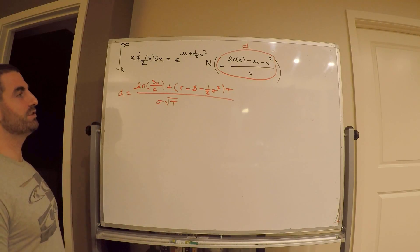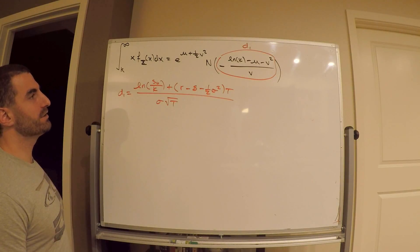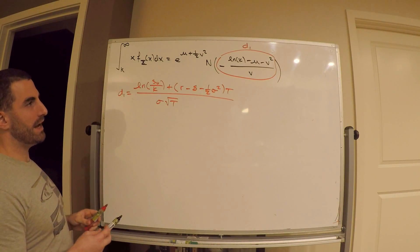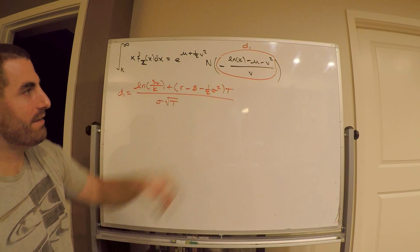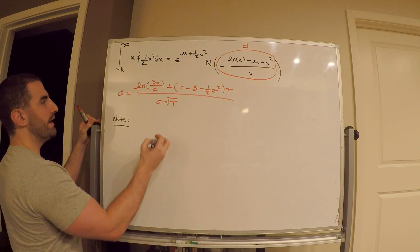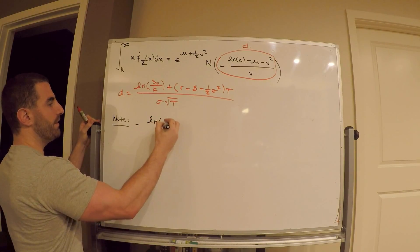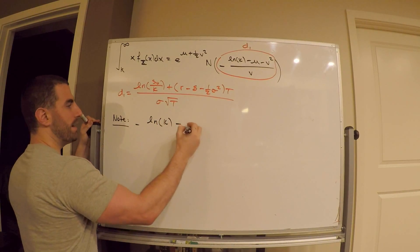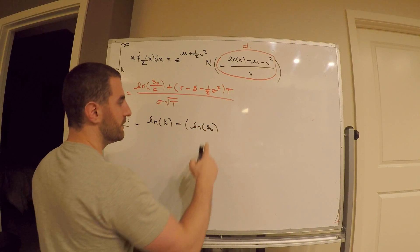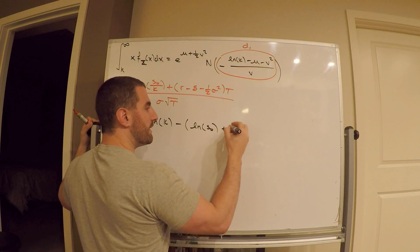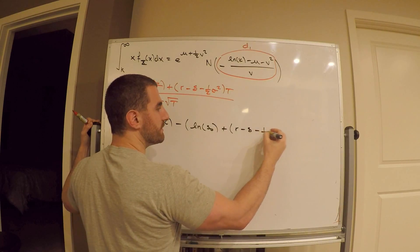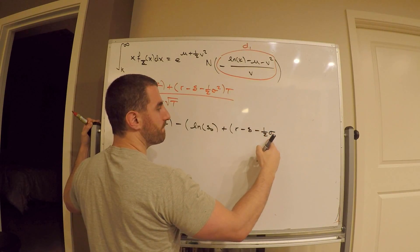My claim is that this expression is D1. I'm not going to do anything fancy — I'll just manipulate it using my definitions of mu and V squared. Notice that negative of the whole thing — negative lnk minus mu minus v squared — where mu equals ln S0 plus r minus sigma minus 1 half...